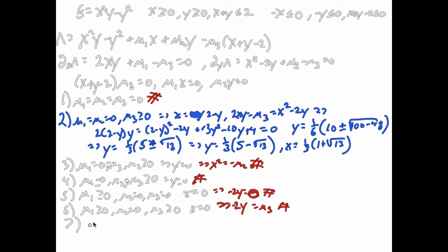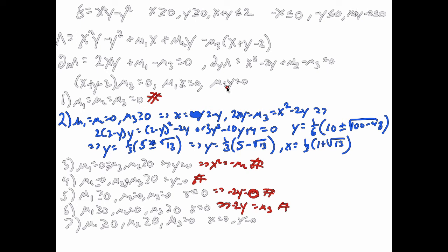Case 7: mu1 and mu2 are positive but mu3 equals 0 — both x equals 0 and y equals 0, but the budget constraint doesn't bind. Equation 1 gives mu1 equals mu3 equals 0, which is fine. Equation 2 gives mu2 equals mu3 equals 0, which is also fine. The third complementary slackness condition is satisfied. So x equals 0, y equals 0 is a possible maximum — a second candidate.